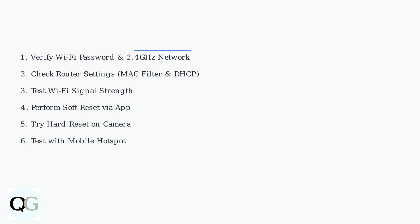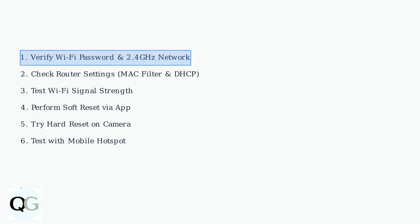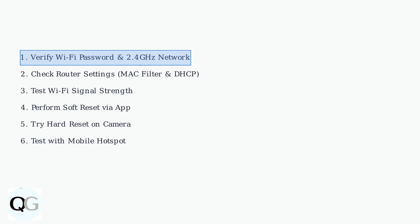Let's walk through the systematic troubleshooting steps to reconnect your Eufy floodlight camera to Wi-Fi. We'll start with the most common issues and work through more advanced solutions. First, verify your Wi-Fi password is correct and ensure your network is broadcasting on the 2.4 GHz band. Most Eufy cameras only support 2.4 GHz networks, not 5 GHz.